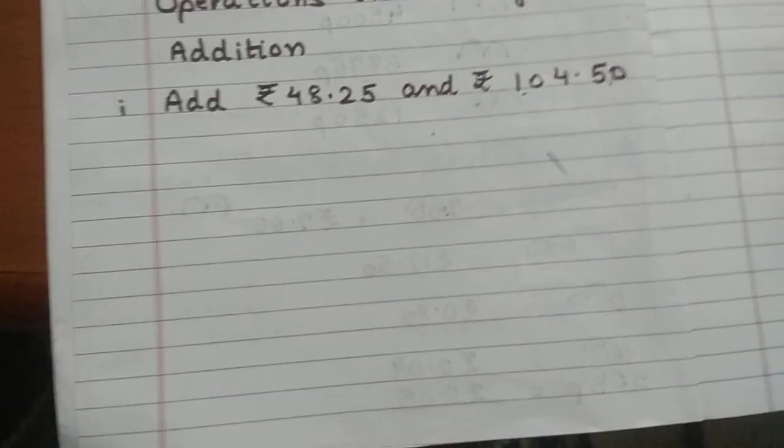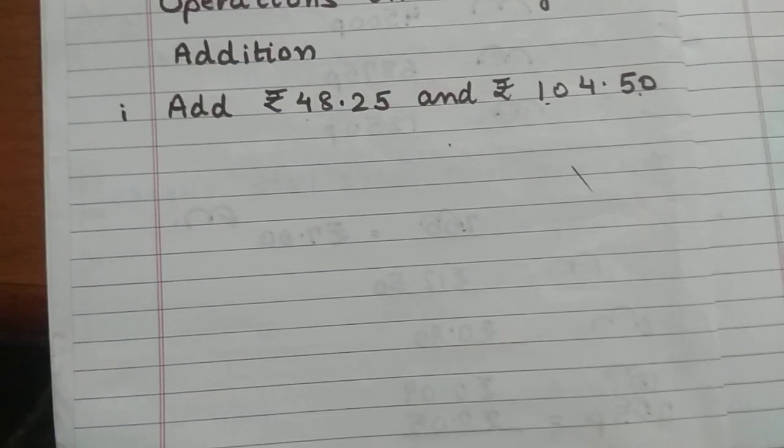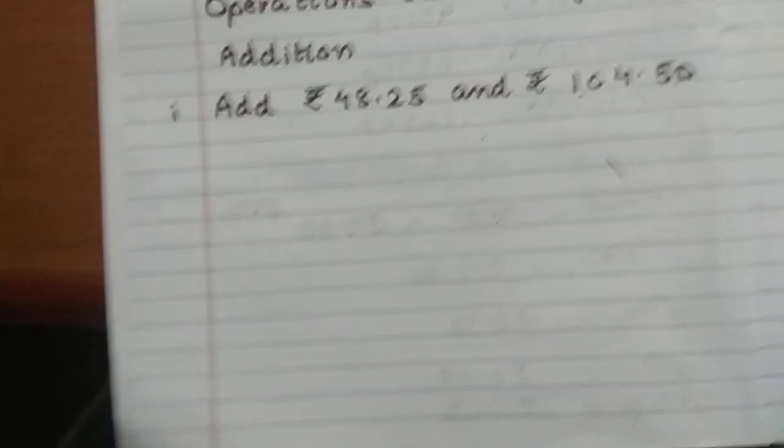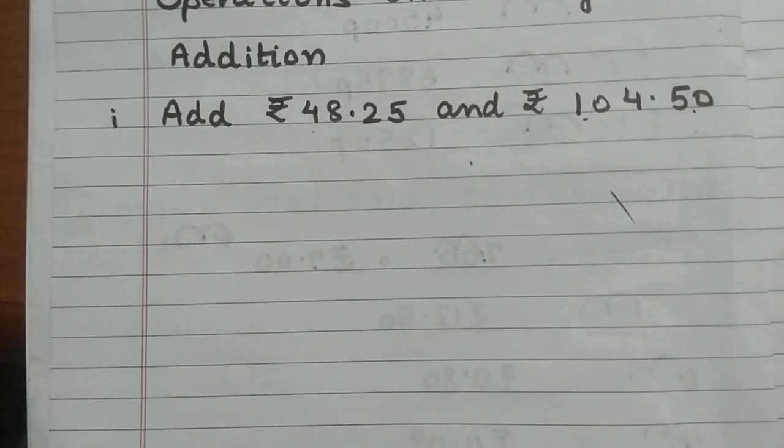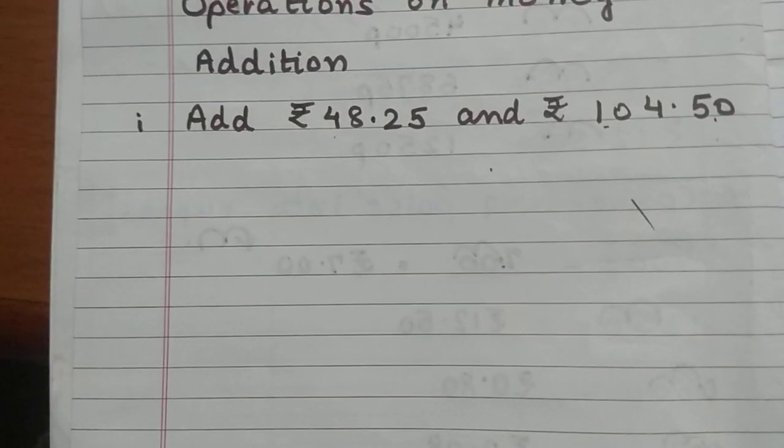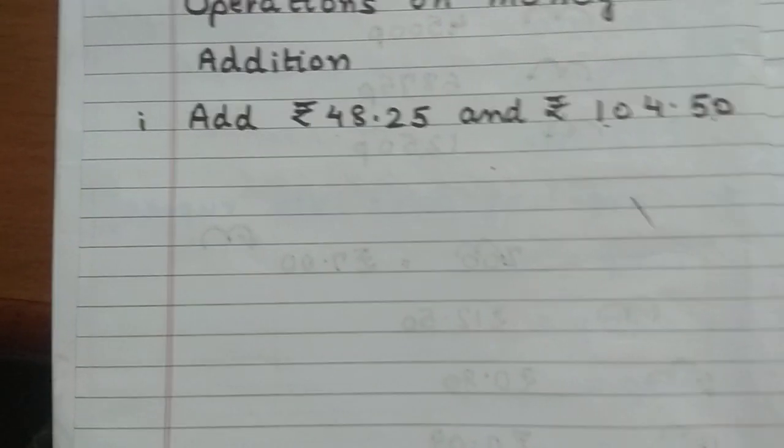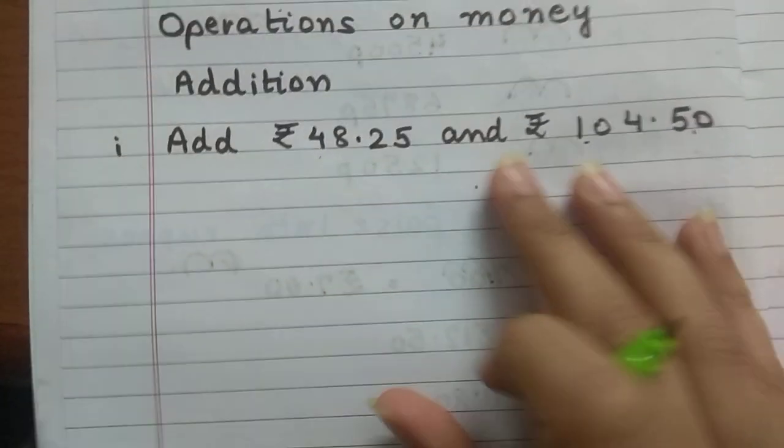First operation we will do on money is addition. Now addition we have studied in third and second class also. So what is different about this addition? The main part in addition of money is the arrangement. Addition we all know how to add, right? But the biggest problem comes in arrangement.